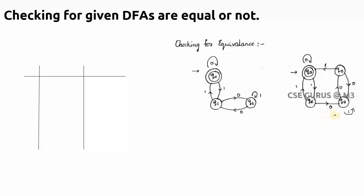Whatever strings are rejected by one DFA should be rejected by the other — only then can we say both DFAs are equal. It is not about the number of states or transitions; one DFA may have three states and the other four, but that doesn't determine equality. Equality is determined by the strings accepted and rejected.